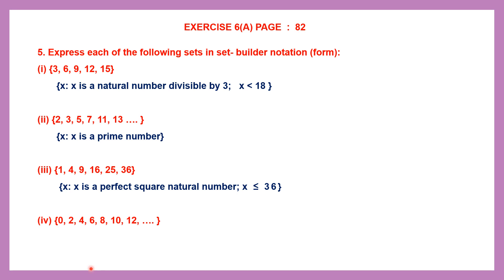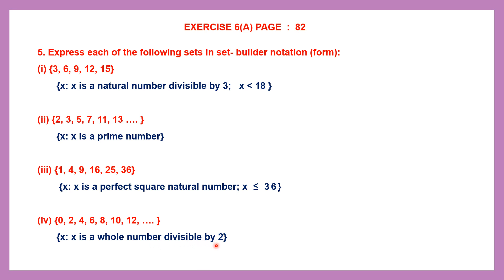Question 4: 0, 2, 4, 6, 8, 10, 12 — it goes on and on. The dots indicate the numbers are going on endlessly. These are all even numbers, and they're all divisible by 2, all multiples of 2. There are different ways of writing it. We can say x is a whole number divisible by 2. Whole numbers start from 0 and it is divisible by 2, so they're all even numbers divisible by 2.